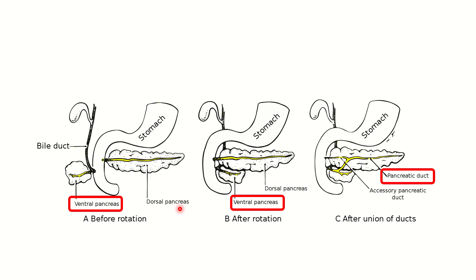In this picture you can see the dorsal pancreas and ventral pancreas during the developmental process of the pancreas, along with other structures such as the liver and gallbladder. The ventral pancreas rotates and reaches its final position. Here you can see the main pancreatic duct, and in the third picture you can see the pancreatic duct after fusion.